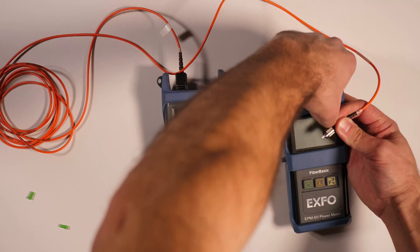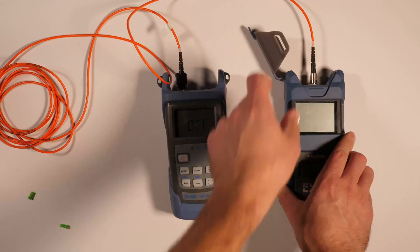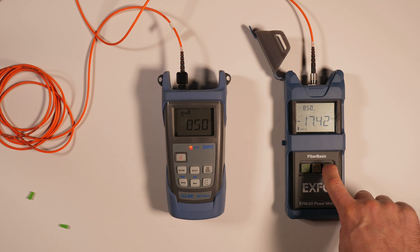If you are performing a relative loss measurement, set a reference level. This is done by connecting the FLS 600 to a power meter and saving the measured power level as the reference.